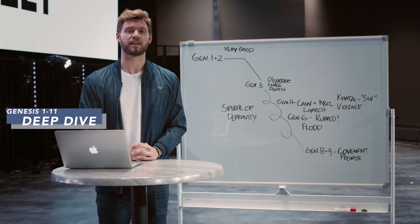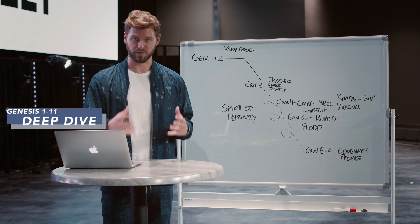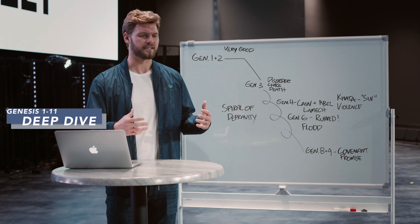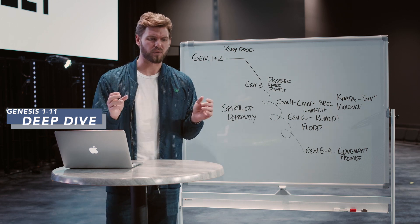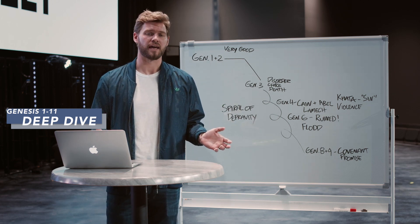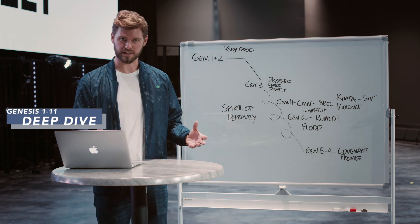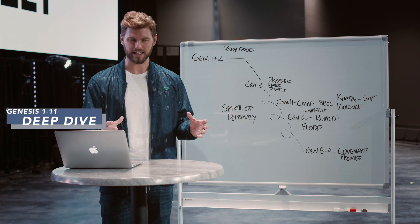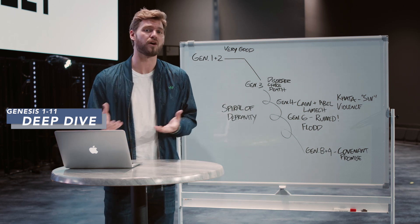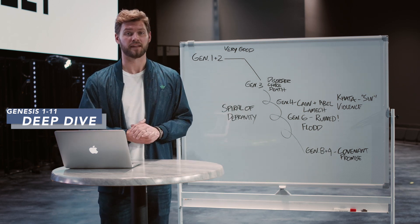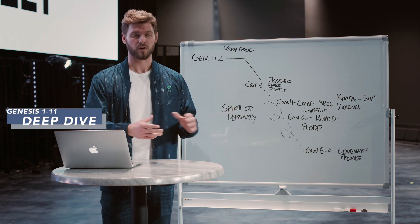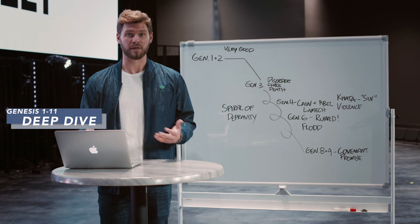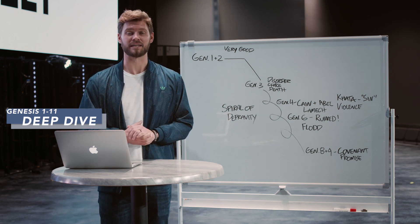Where we left off last time after chapters 1 through 3 — Genesis 1 is God's beautiful creation of the world. The way that God creates the world is that he takes a world that is dark, chaotic, and empty — tohu vavohu. Tohu is the Hebrew word meaning disordered or wild, and vavohu is the Hebrew word that means empty.